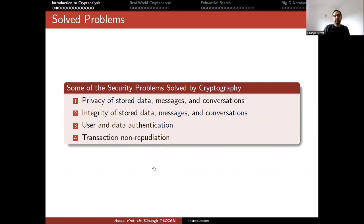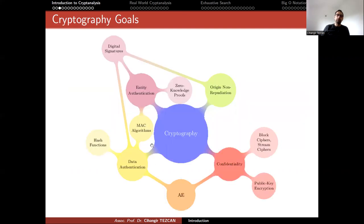We also provide integrity for stored or transmitted data, messages, and authentic conversations. We solve the user and data authentication, transaction non-repudiation. So last time I didn't show this picture, but now let's look at this picture with the previous slide in our mind. So cryptography solves a lot of problems. For instance, for the case of confidentiality, you can use block ciphers, stream ciphers to perform encryption. So in this way, you obtain confidentiality. But you can also use public key encryption algorithms like RSA or ElGamal.